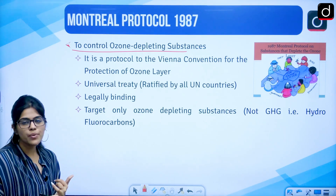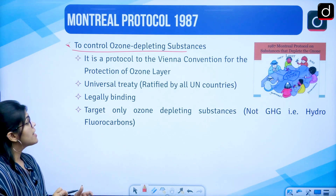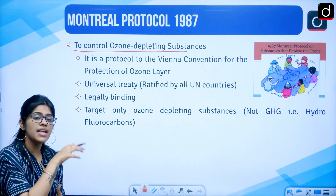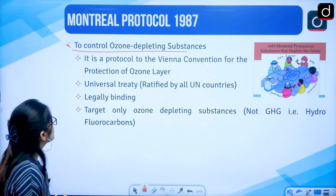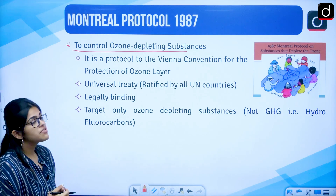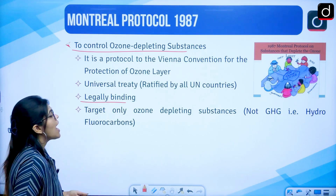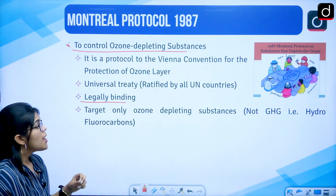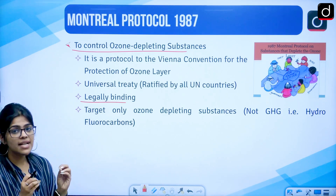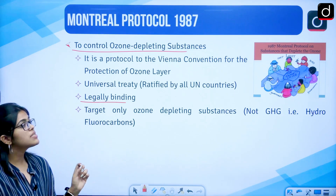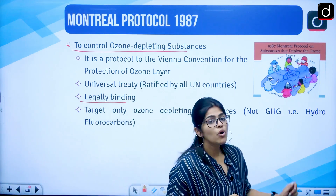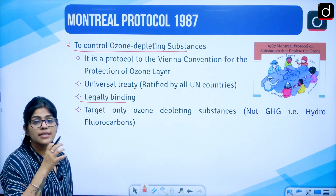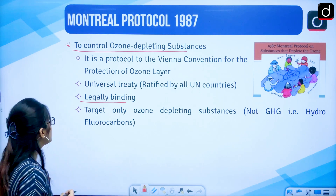The Vienna Convention talks about the protection of the ozone layer and how it is deteriorating. The Montreal Protocol talks about the different circumstances causing the depletion of the ozone layer. It is a universal treaty ratified by all UN countries, is legally binding, and targets only the ozone depleting substances — not the greenhouse gases, but substances like hydrofluorocarbons responsible for ozone depletion. Montreal Protocol 1987 focuses on reducing ozone depleting substances.